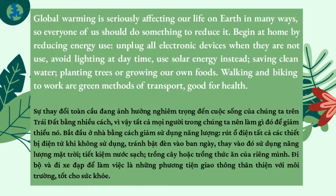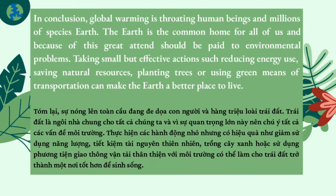Global warming is seriously affecting our life on Earth in many ways, so every one of us should do something to reduce it. Begin at home by reducing energy use, unplug all electronic devices when they are not used, avoid lighting at daytime, use solar energy instead, saving clean water, planting trees or growing our own foods. Walking and biking to work are green methods of transport, good for health.